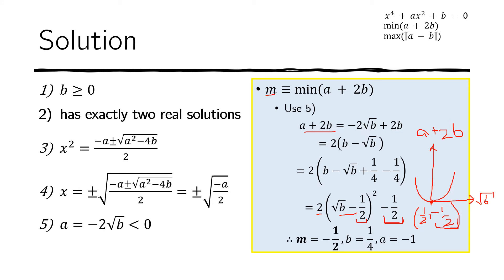At the minimum, the square root of B equals one-half, so B equals one-fourth. Using condition five, A equals negative 2 times one-half equals negative one. Checking the conditions: B equals one-fourth is non-negative, and A equals negative one is indeed negative — both are consistent.